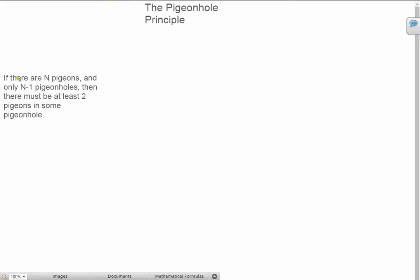The Pigeonhole Principle states if there are n pigeons and only n minus 1 pigeonholes, then there must be at least two pigeons in some pigeonhole. Simple right?